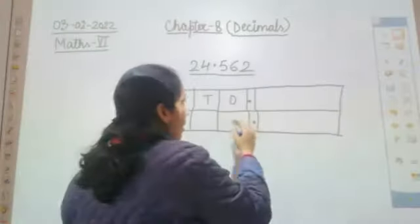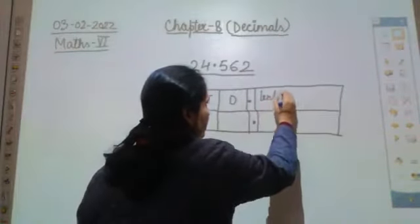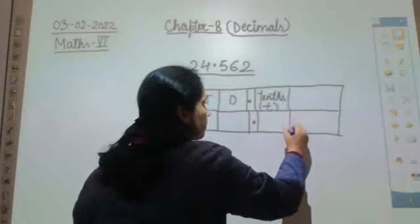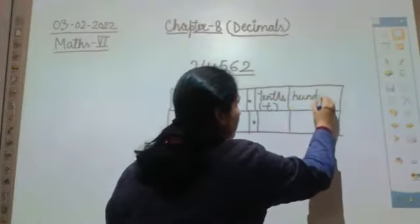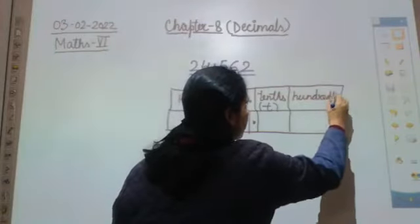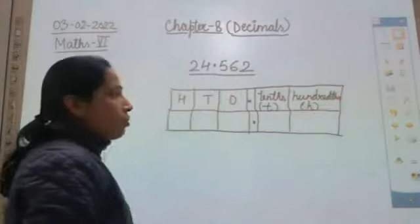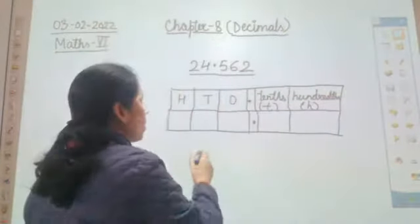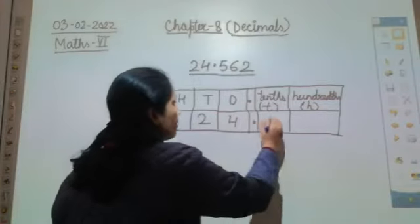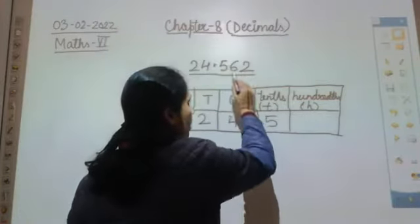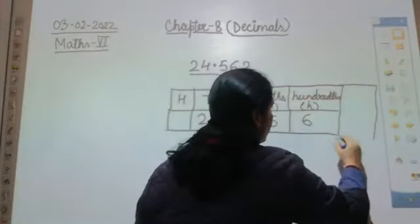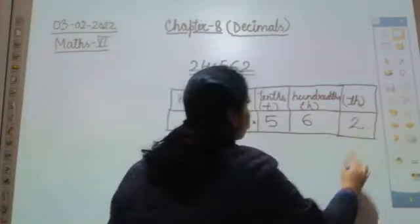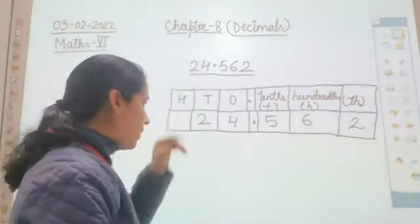After decimal, the place values will be denoted with small letters - tenths will be denoted with small 't', hundredths with small 'h', and thousandths with small 'th'. So understand this: tenths denoted with small t, and hundredths denoted with small h.